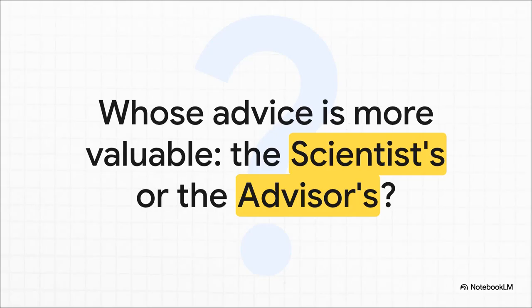So we end right back where we started, with the economist's two roles: the scientist and the advisor. Which leaves a final question for you to think about. The next time you hear someone giving economic advice, just ask yourself: which hat is that person wearing? Are they the scientist, just describing reality? Or are they the advisor, trying to shape it? And maybe more importantly, which one should we be listening to?